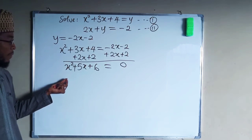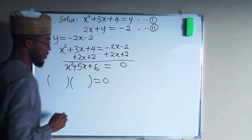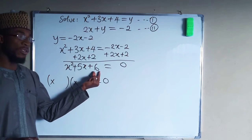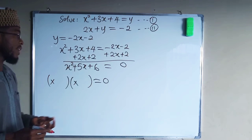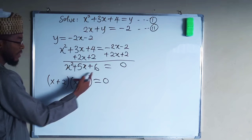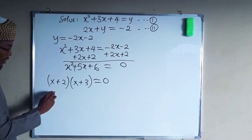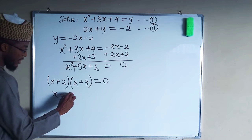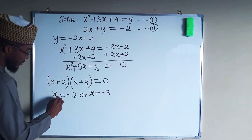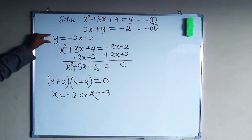We factorize x squared plus 5x plus 6. Two numbers that multiply to give 6 and add to give 5 are 2 and 3, giving us factors (x plus 2)(x plus 3). Setting each factor to zero: x₁ equals negative 2 and x₂ equals negative 3. We now substitute these into our equation to find the y values.